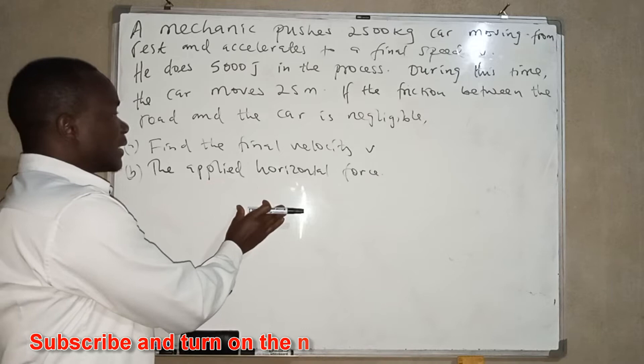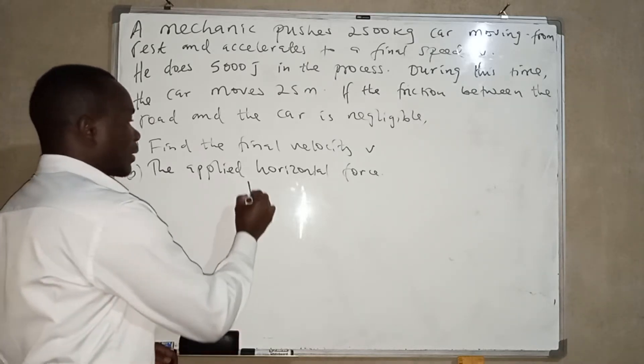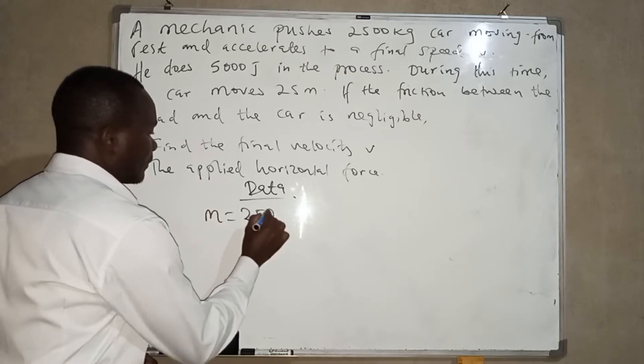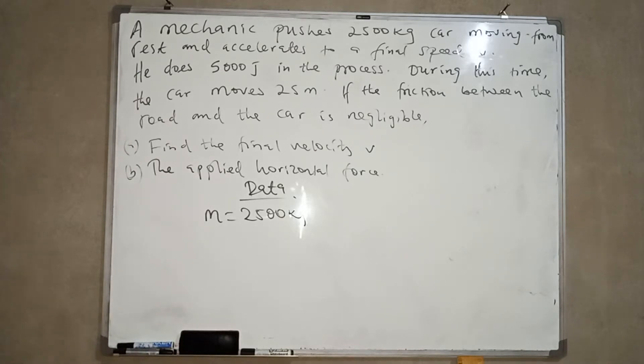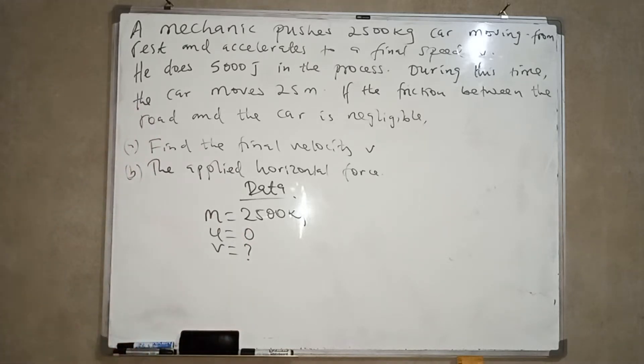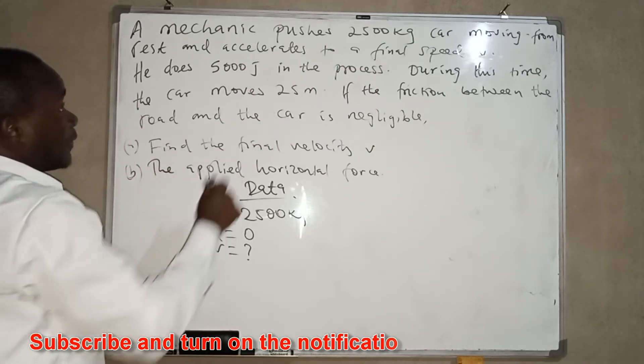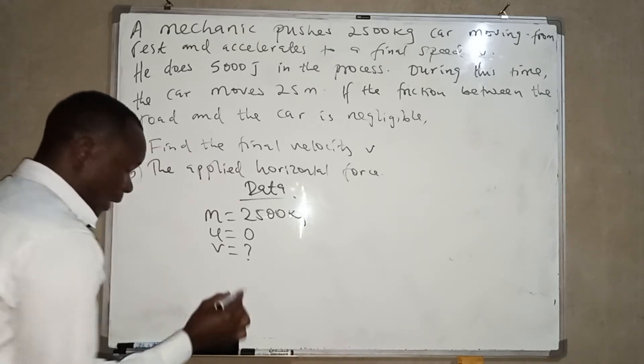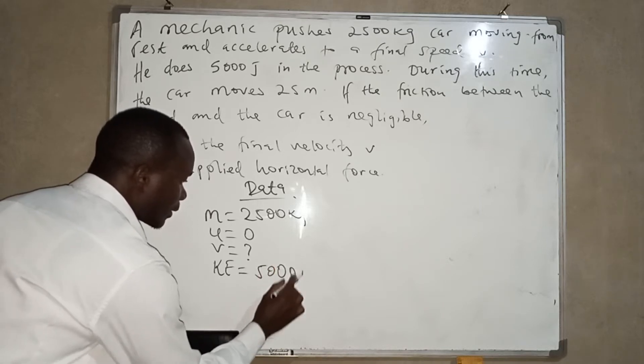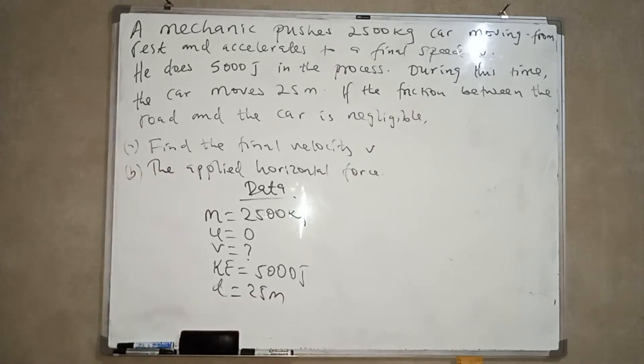So from this, we want to find the value of velocity. Let us begin by collecting the data. So we have mass, 2,500 kg. We have initial velocity, 0, we have final velocity, which we do not know. Then we have the energy that is done when something is moving, the energy that is possessed by that object is kinetic energy, which is 5,000 joules. Then we have distance, which is 25 meters.